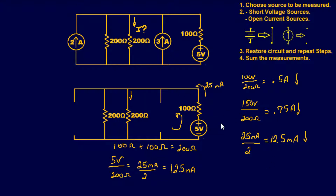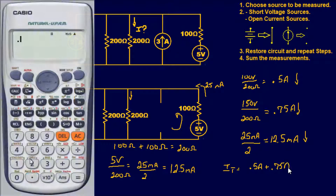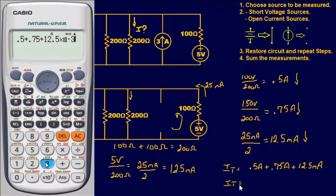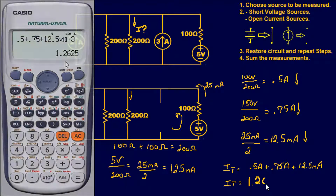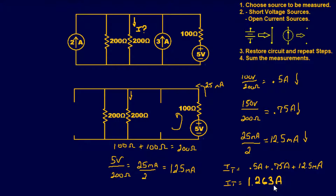We've measured all sources, so now we sum all the measurements. Total current equals 0.5 amps plus 0.75 amps plus 12.5 milliamps. Plugging this into the calculator gives a final answer of 1.263 amps through the 200-ohm resistor.